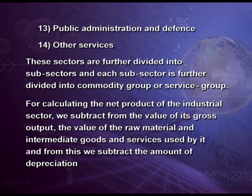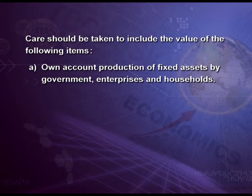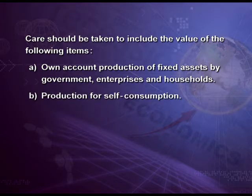For calculating the net product of an industrial sector, we subtract from the value of its gross output the value of raw materials and intermediate goods and services used by it, and from this we subtract the amount of depreciation. For the economy as a whole, we add net products contributed by each sector to get net domestic product. Care should be taken to include: own account production of fixed assets by government, enterprises, and households; production for self-consumption (which is not sold).